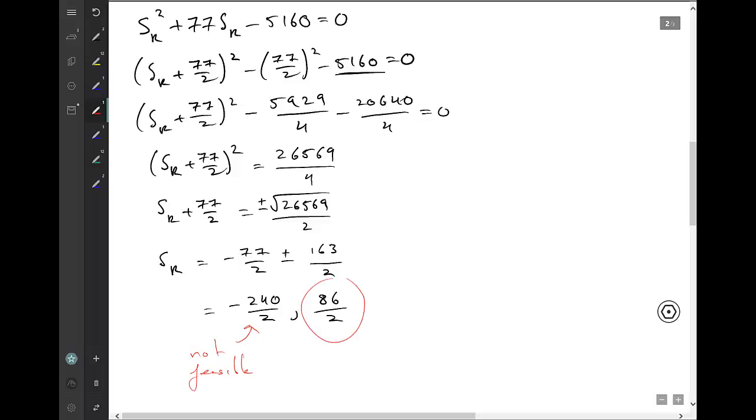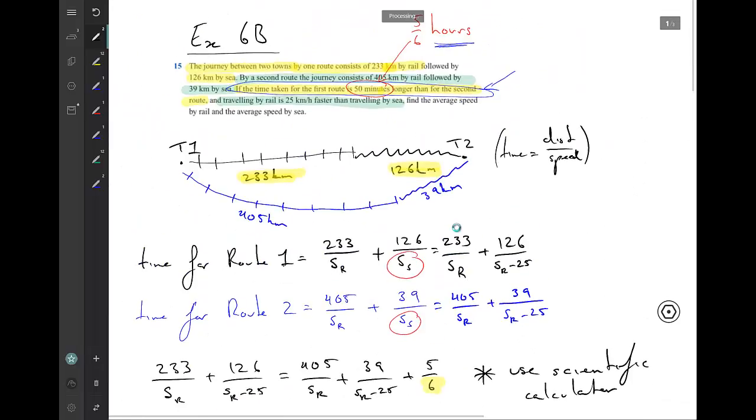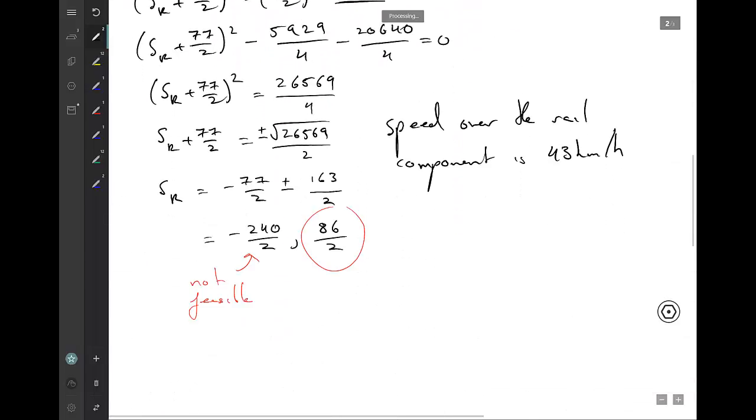And so that's our answer. So in other words, speed over the rail component is 43 kilometers an hour, which is just 86 divided by 2. So if we go up, is that what they were asking? Find the average speed by rail and the average speed by sea. So we've found the average speed by rail.